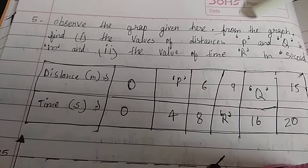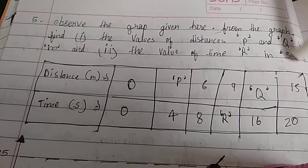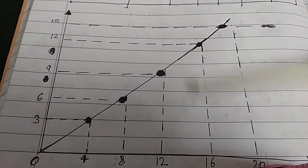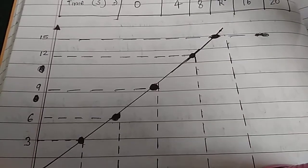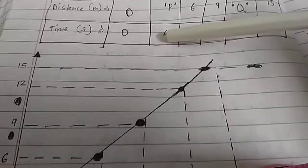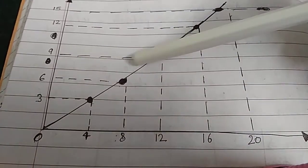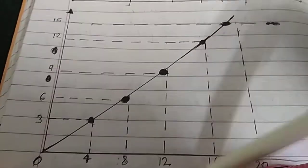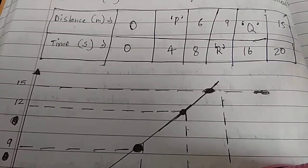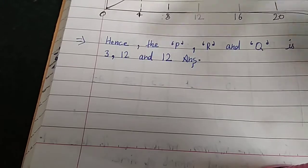Last question: Observe the graph given here. From the graph, find first the value of distance P and Q in meters and second the value of R in seconds. This is our graph. We need to check and find which value is P, R, and Q. You will see it's very simple. P is equal to 3, R equals 12, and Q equals 12. Hence, the P, R, and Q is equal to 3, 12, and 12.